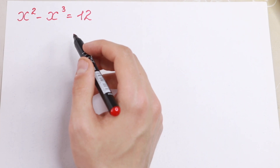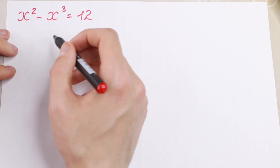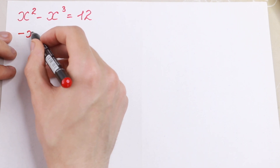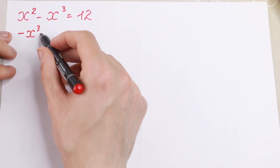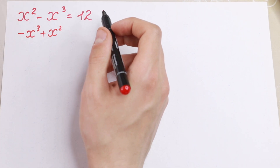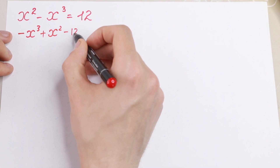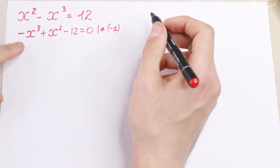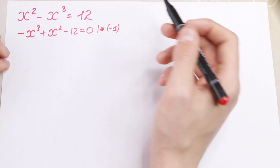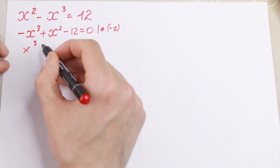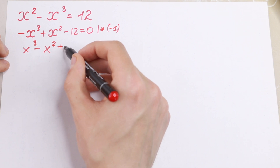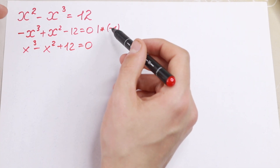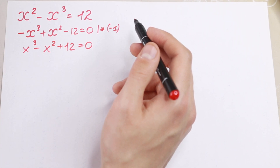How can we solve this cubic equation? I want to show you a really good trick. If we bring the x³ term to the beginning — so minus x³ first, then plus x², changing the order — and bring minus 12 to the other side equal to zero, then multiplying by minus one gives us: x³ minus x² plus 12 equal to zero.